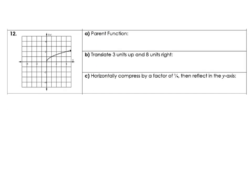Starting out with this one, it looks like our parent function here should be the square root of x. Then notice we need to shift 3 units up and 8 units to the right, so our new function f of x is going to be the square root of – 8 units right – remember that's going to be x minus 8, the opposite of what we would think because it's on the inside, and then 3 units up – we're going to add 3.